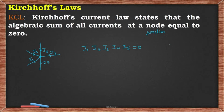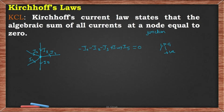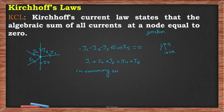The sign convention is: Leaving current is Positive (LP). Whatever currents are leaving the junction, we consider them positive. So I1, I2, I3 are all moving towards the junction — they get a minus sign. I4 and I5 are leaving the junction — they are positive. Rearranging: I1 + I2 + I3 = I4 + I5. This means incoming current equals outgoing current.